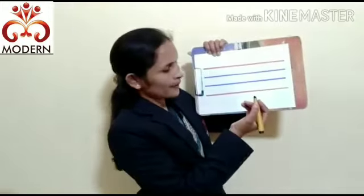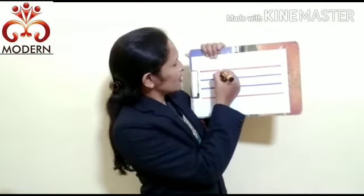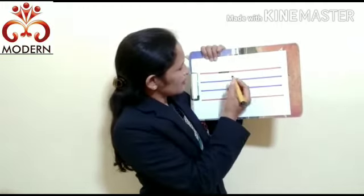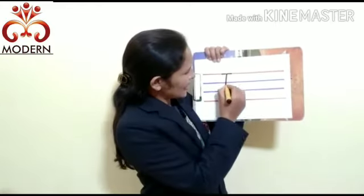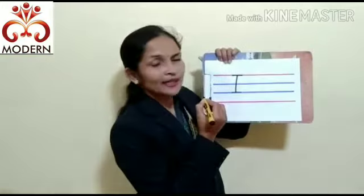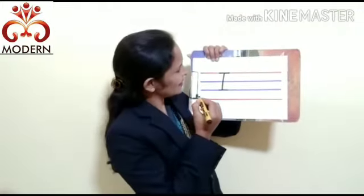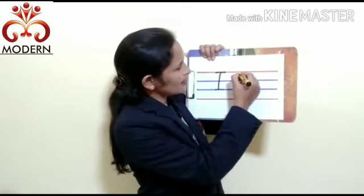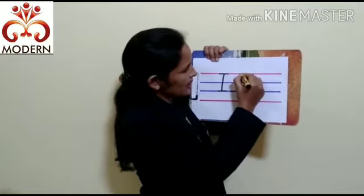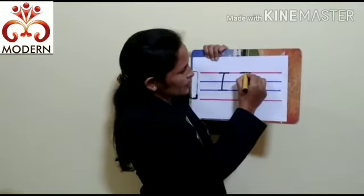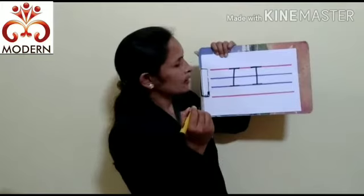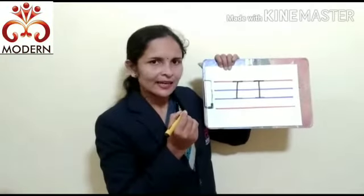Look here. Firstly, draw a sleeping line. Then join a standing line. Then join a sleeping line. That completes the letter I.